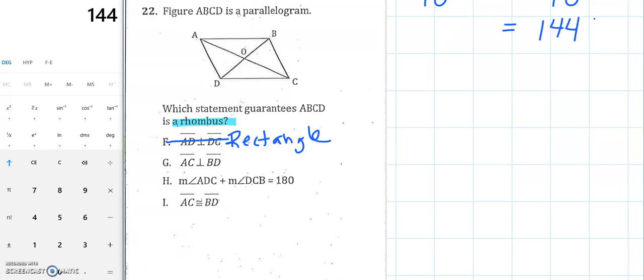Next, AC, which is one diagonal, is perpendicular to BD. Oh, okay, so there's right angles at the intersection point. That is a very popular rhombus property. So I think it's gonna be G, but I'm not gonna be so sure until I go through all of my choices.